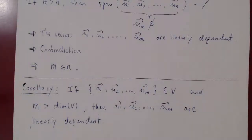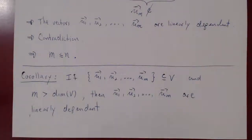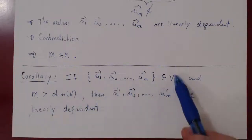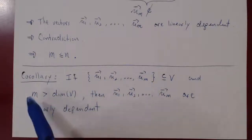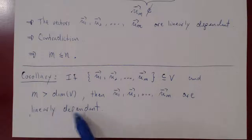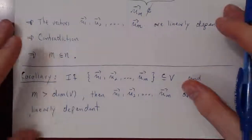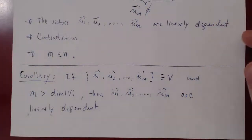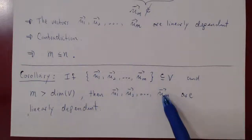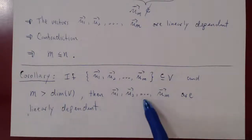Why is this useful? Sometimes the question will be to decide whether vectors are linearly dependent or independent. If you have vectors in a vector space and you have more vectors than the dimension of the space, you do not have to do anything. Automatically, these m vectors are linearly dependent. Here is a simple yet non-trivial example. Always keep this in mind: if you have more vectors than the dimension of your space, the vectors are automatically linearly dependent.